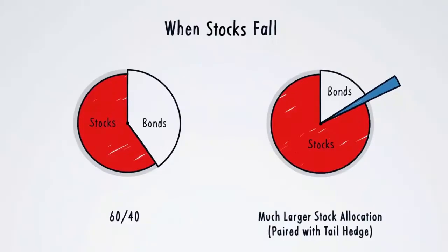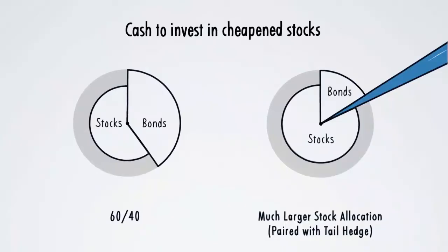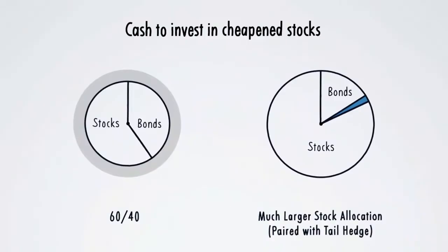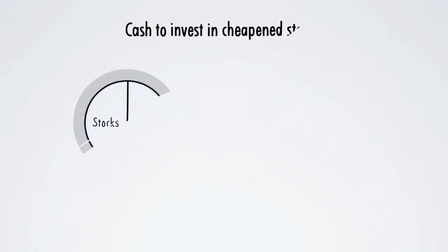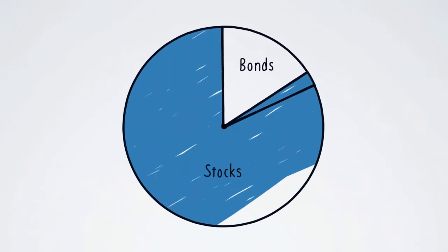And importantly, after the fall, when everyone else is selling their stocks, notice how the tail hedge has created all this cash or liquidity to use to invest in more cheapened stocks. And this is cash you would otherwise have only if you had started with a much smaller stock allocation. So you can see how that tiny sliver of a hedge in its own indirect roundabout way in up and down markets can be the driver of consistently higher returns for the entire portfolio.